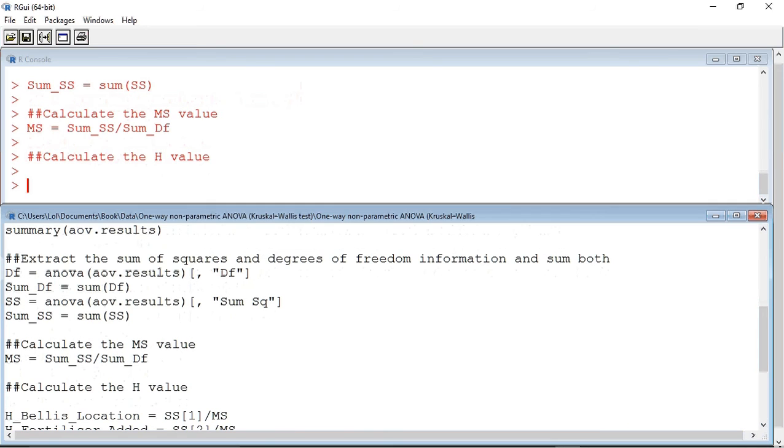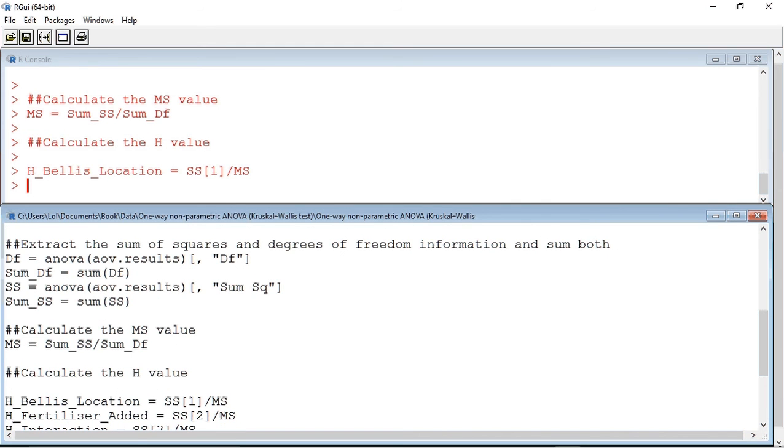The H value for the fertilizer added is calculated by taking the sum of squares value at position 2 in the sum of squares variable and again dividing by the MS value. And finally, we can calculate an H value for the interaction between location and fertilizer. This is calculated by taking the sum of squares value at position 3 in the SS variable and again dividing it by MS.